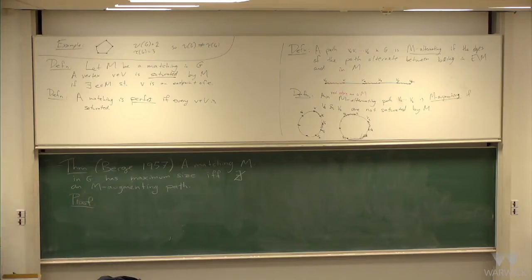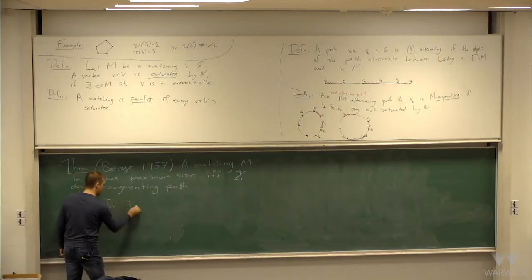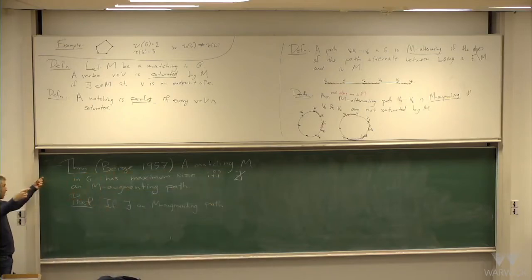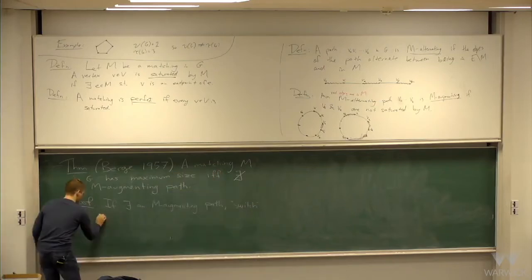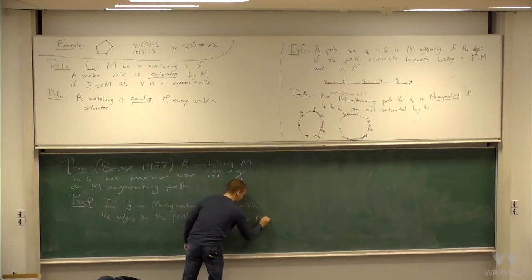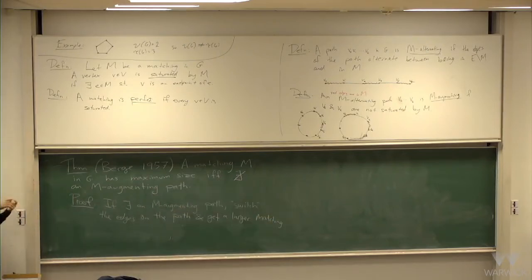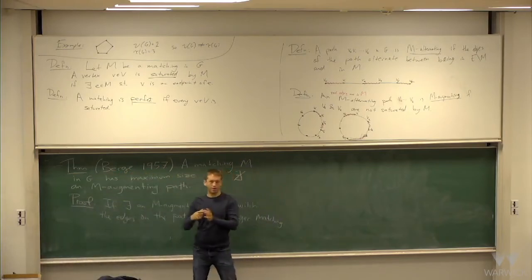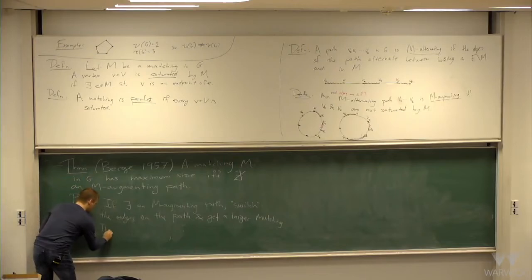If you think about it, it's not so easy to find an M-augmenting path. One direction is easy: if there exists an M-augmenting path — a path where the endpoints are not saturated and it switches between M and the complement of M — then you switch the edges on the path and get a larger matching. Every edge not in the matching gets added, and every edge in the matching gets removed. It was important that the endpoints originally weren't saturated, because that ensures it stays a matching.